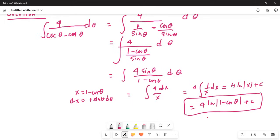So the substitution I did was x equals 1 minus cosine theta, and dx equals sine theta d theta. It's positive because the differentiation of cosine theta itself is minus sine theta, and two minuses make it plus. The final answer is 4 natural logarithm of 1 minus cosine theta plus C.